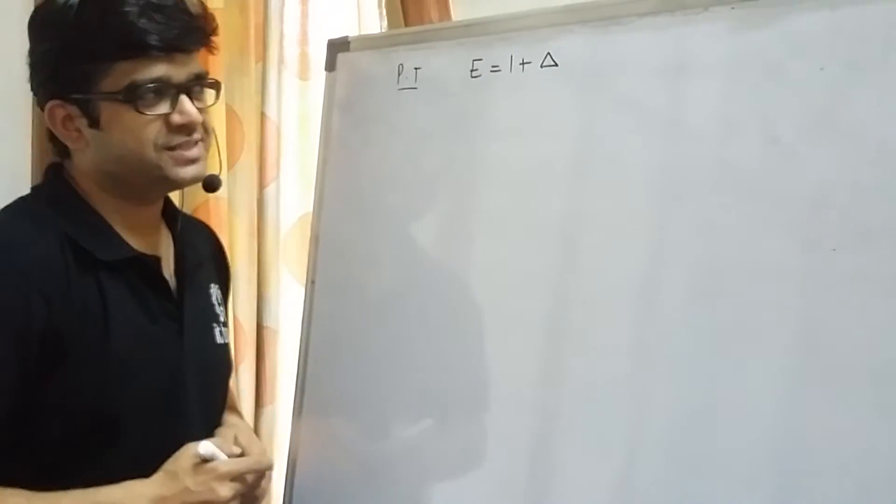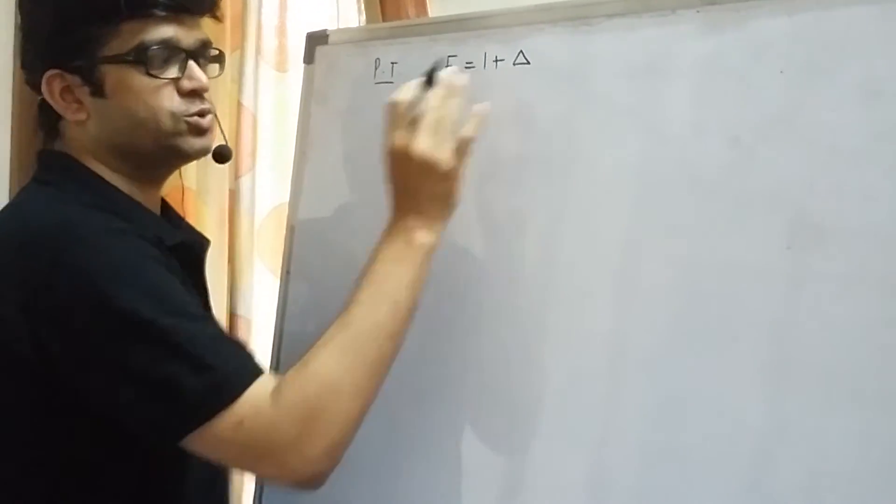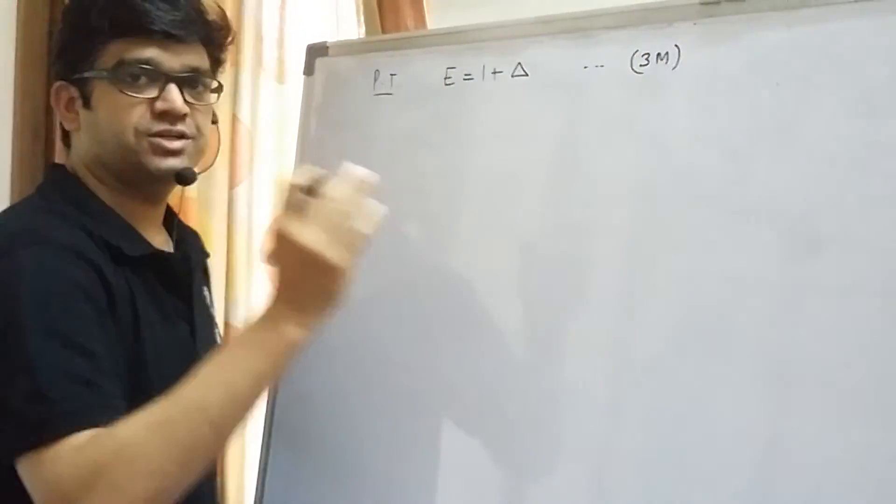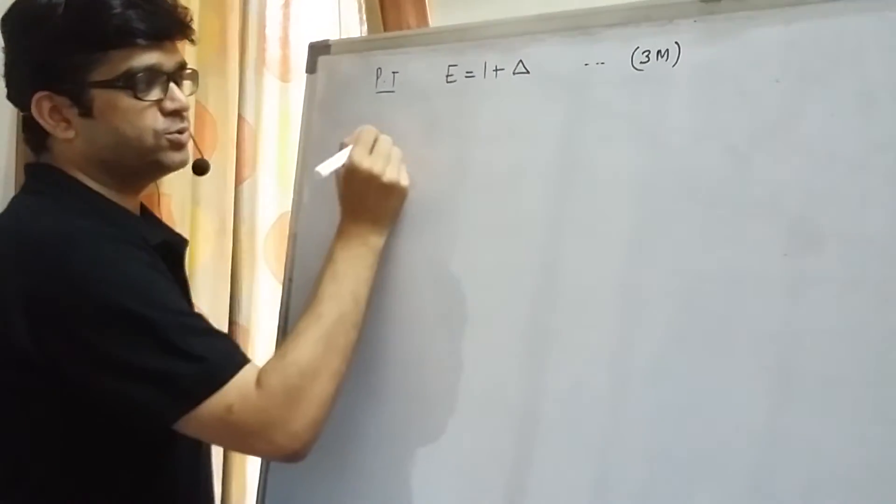So it's a very simple question. Prove that E equals to 1 plus delta and this question is asked for three marks in question number 1. Now how we do it? Very simple.